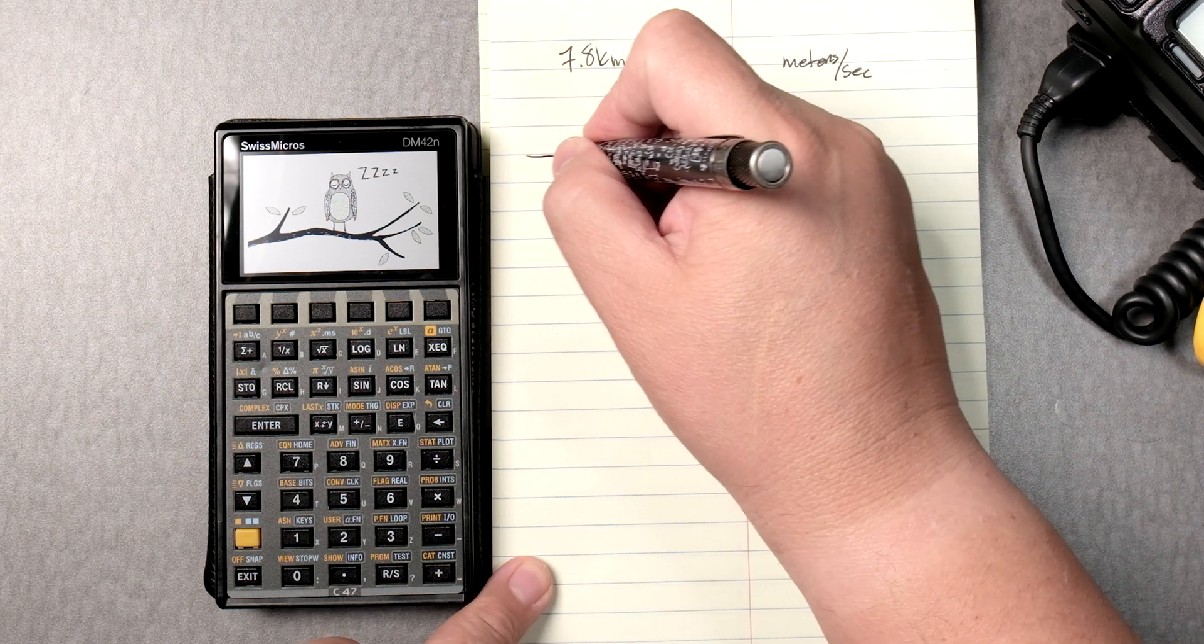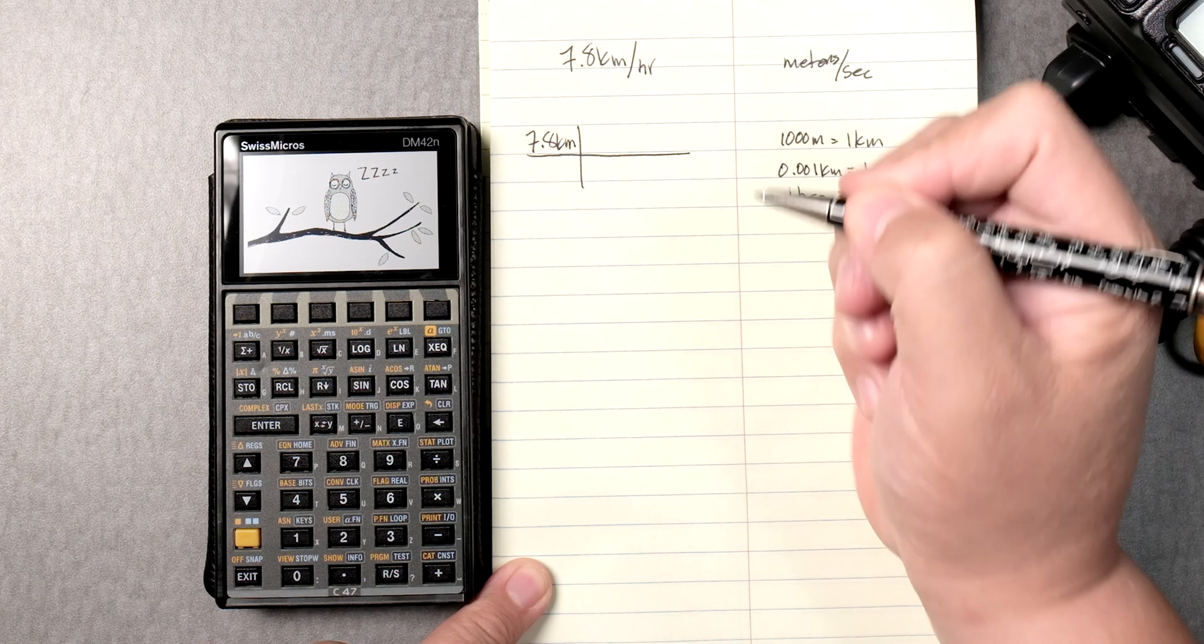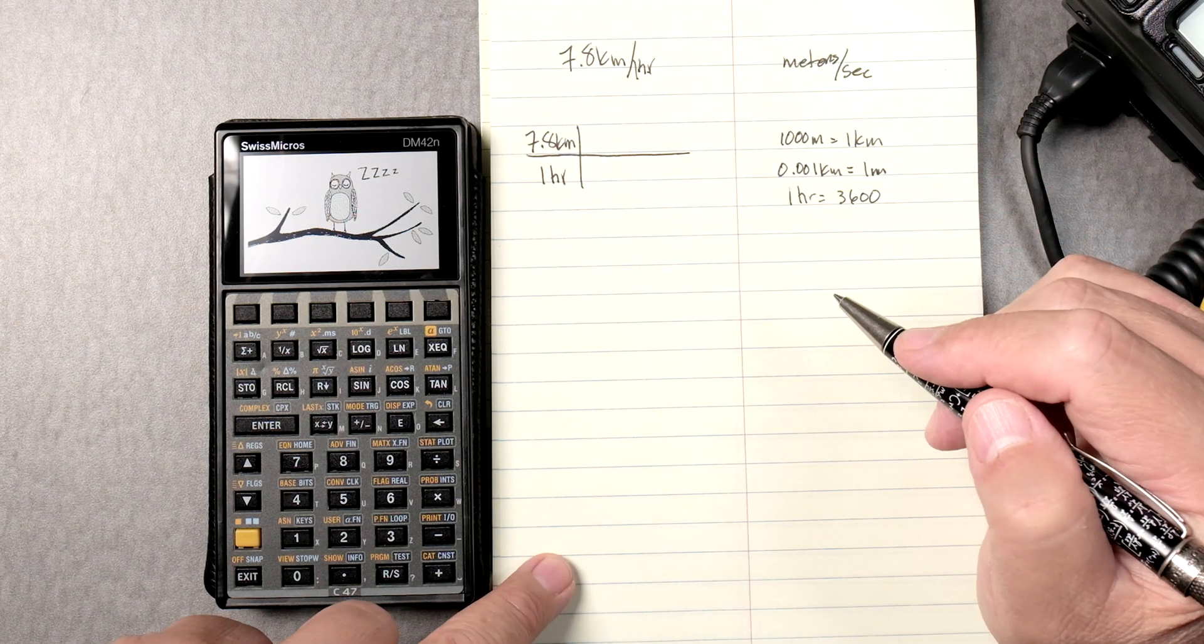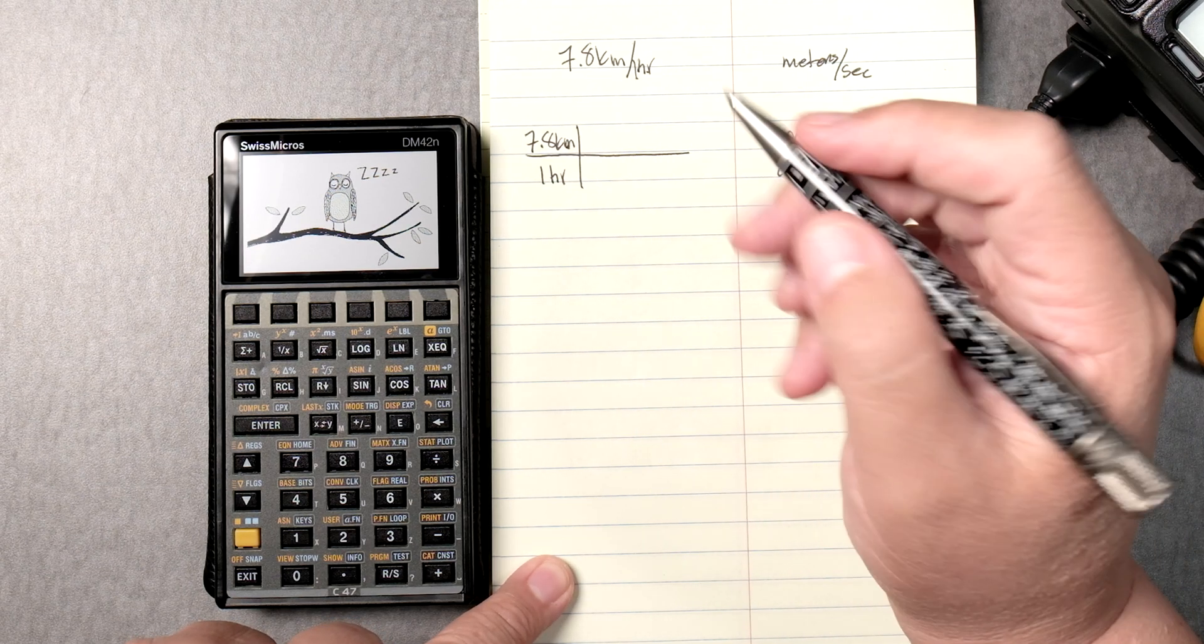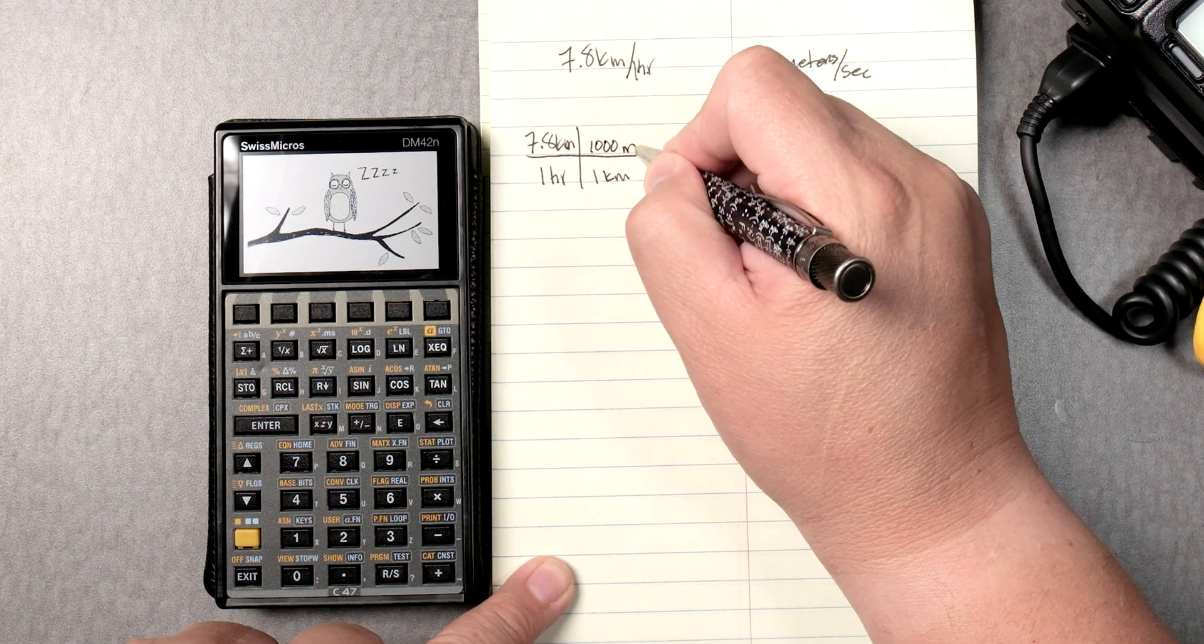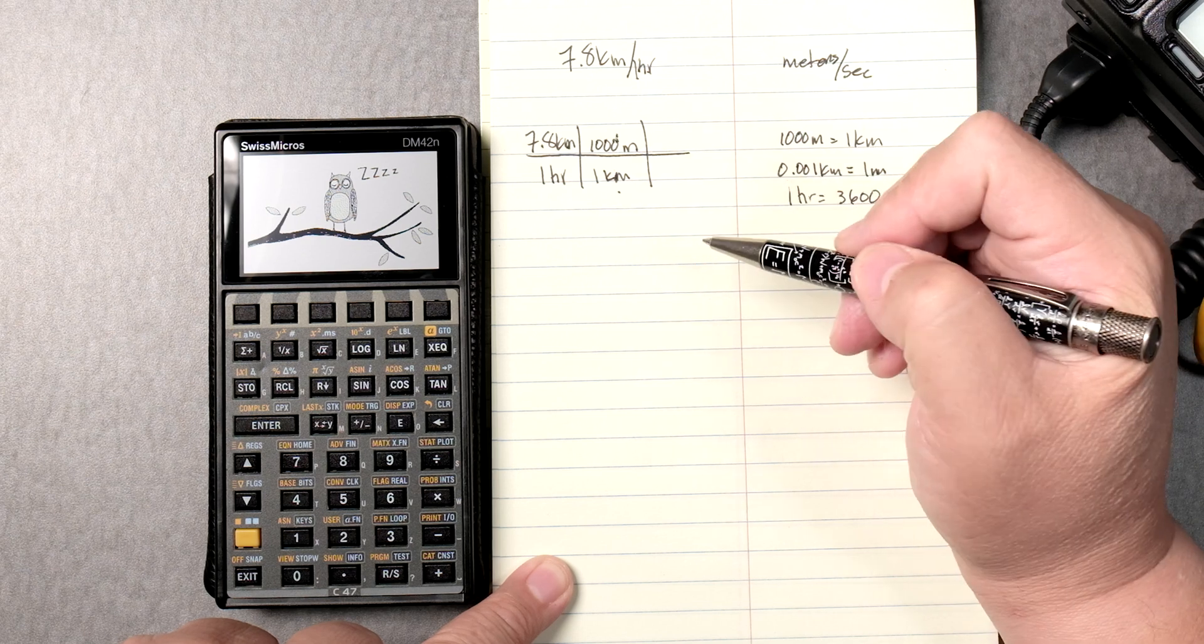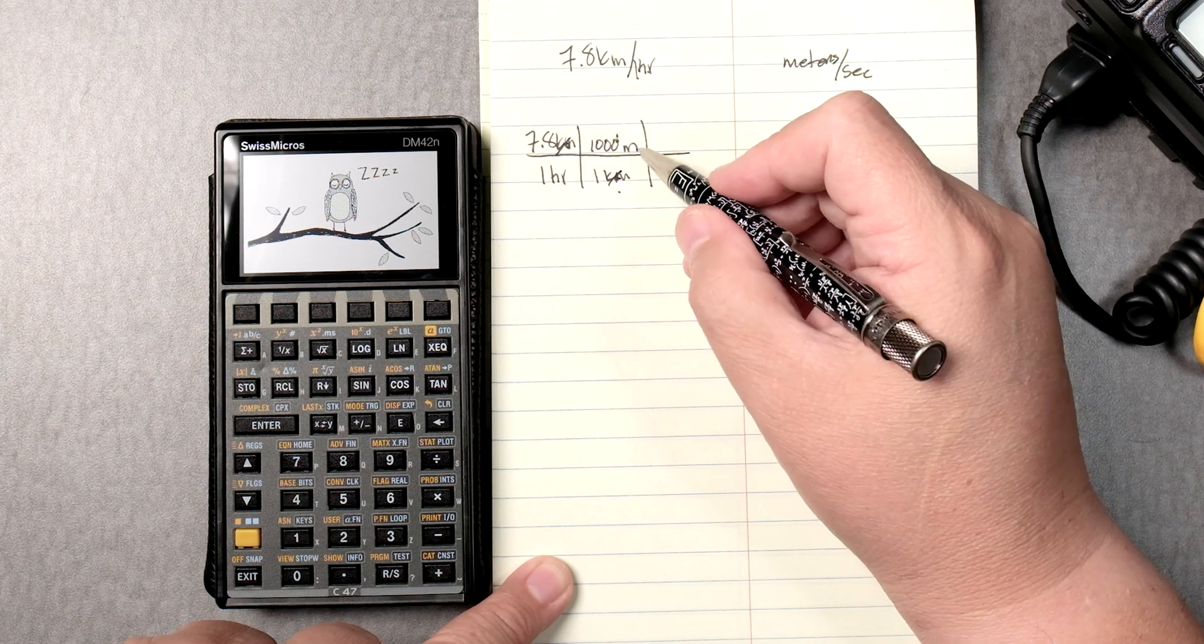So we make a table here. 7.8 kilometers for every one hour. And we want to change the kilometers into meters. To do that, we can say that 1 kilometer, which will be on the bottom here, is 1,000 meters. So this right here is a ratio between kilometers and meters, which is perfect. Kilometers on the top here, kilometers on the bottom. These will cancel out nicely to give me meters.